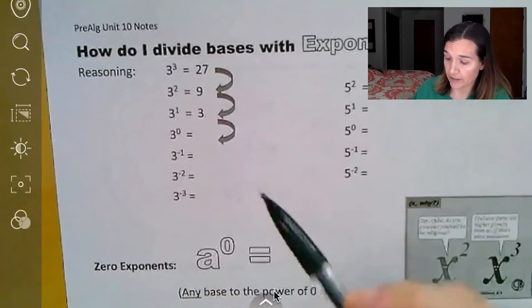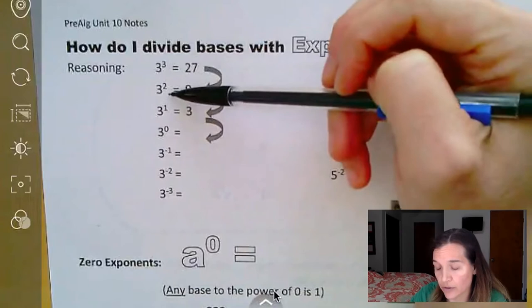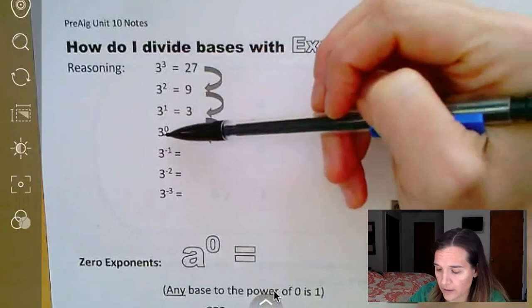So kind of a weird thing. There's something called zero exponents. And here's what happens with them. If you'll notice three to the third power is three times three times three, 27. Three squared is three times three, or nine. Three to the first power is three.